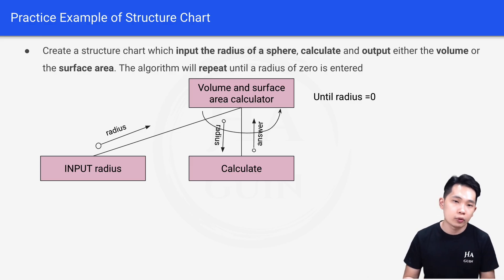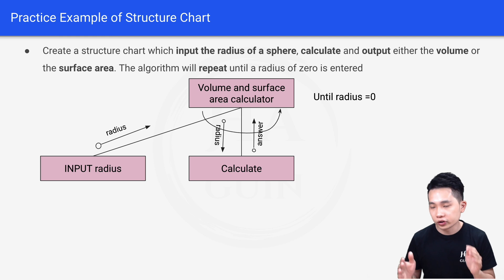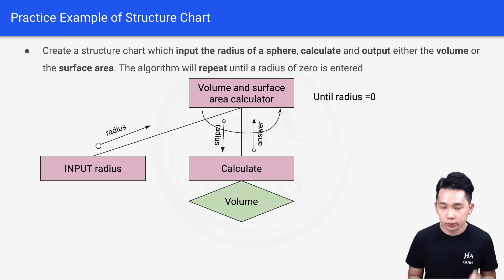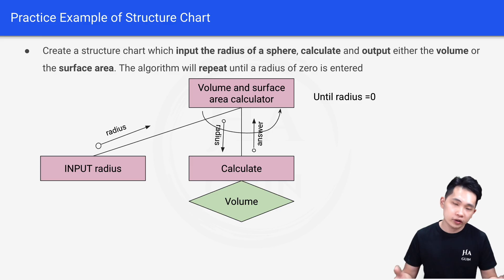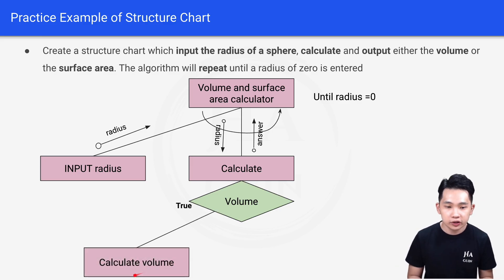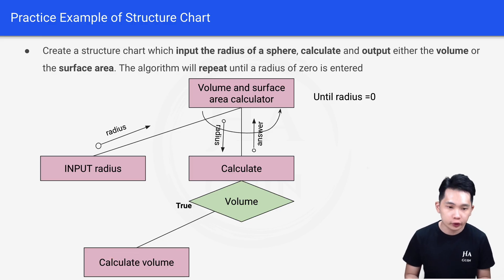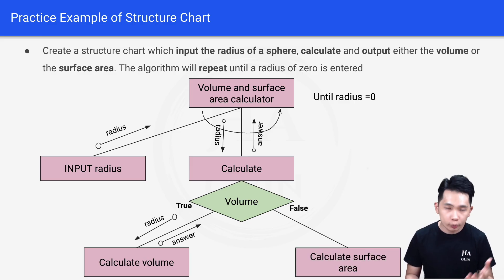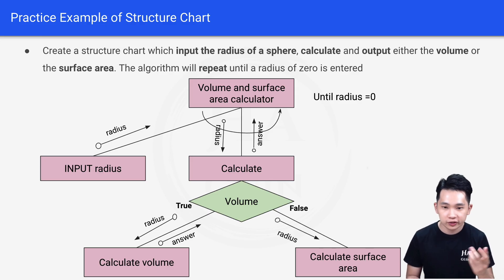Under the Calculate module, we either calculate the volume or the surface area. We ask: are we calculating volume? If true, we run the Calculate Volume module — input is radius, output is answer. If false (volume is false), we calculate the surface area module — input is radius, output is answer.